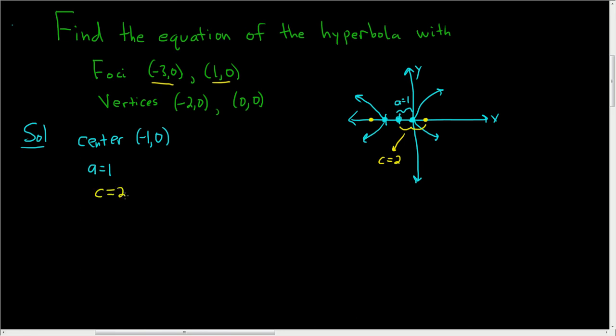We just need to find b. So there's a formula that relates a, b, and c. c squared is equal to a squared plus b squared. And the trick is a hyperbola has a minus sign, so you have a plus here. If it was an ellipse, we would have a minus. So it's just the opposite of what you see in the equation.